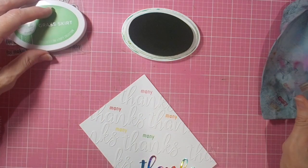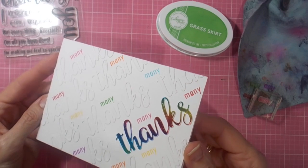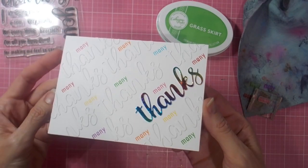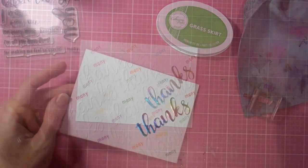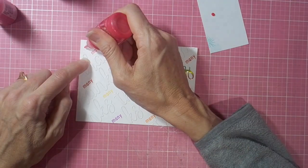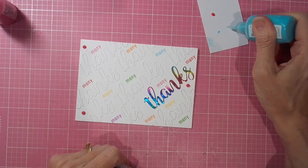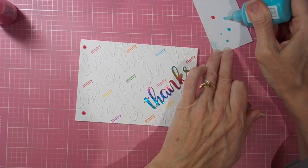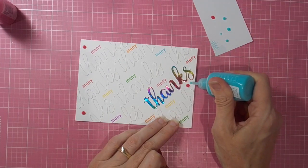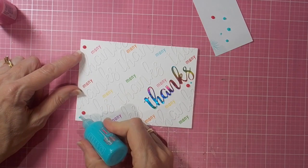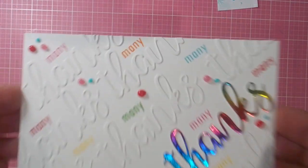Thanks so much for joining me today. I hope you've got some ideas for cards of your own. I just love that white on white look that you can get using your die cuts, and of course you can just jazz things up with a bit of foil and some colored sequins or, in my case, some Nuvo drops. I'll be back again soon. I'll see you then.